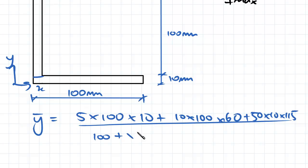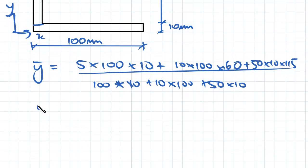So we've got 100 times 10 plus 10 times 100 plus 50 times 10. And if you plug that in your calculator, you're going to get y bar equal to 49.